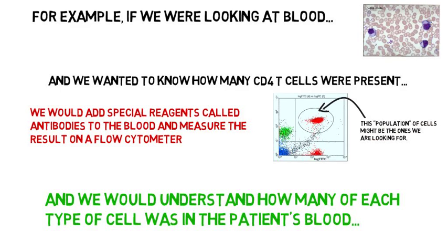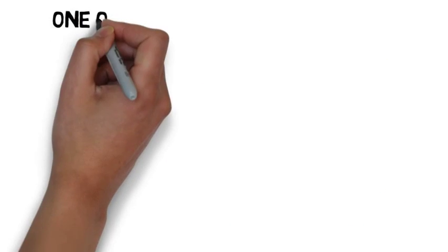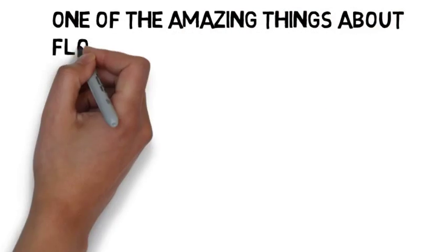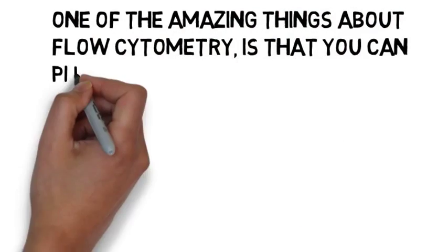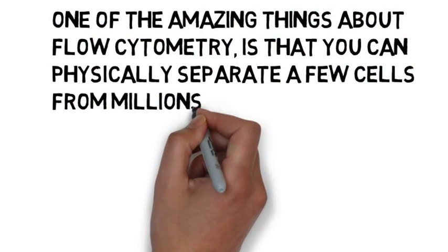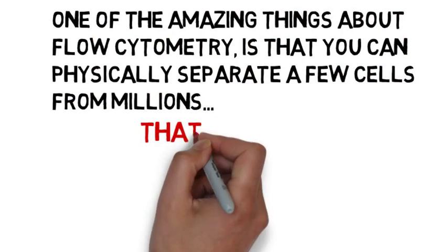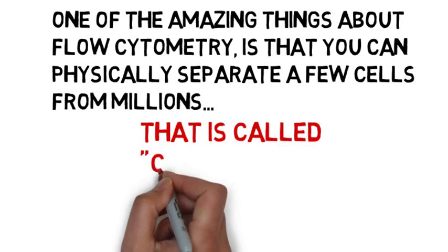And that's not all. One of the most amazing things about flow cytometers is that you can physically separate a few cells from millions. And that process is called cell sorting.